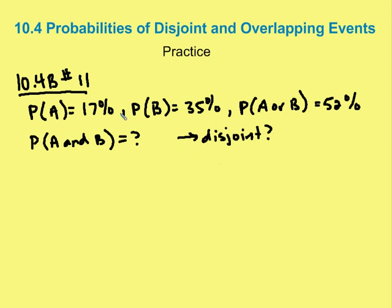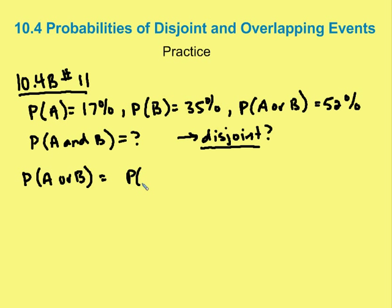In the last problem, 10.4B number 11, we're asked whether the events A and B are disjoint. Disjoint means P(A and B) = 0, which means they're mutually exclusive. We use the formula: P(A or B) = P(A) + P(B) − P(A and B).